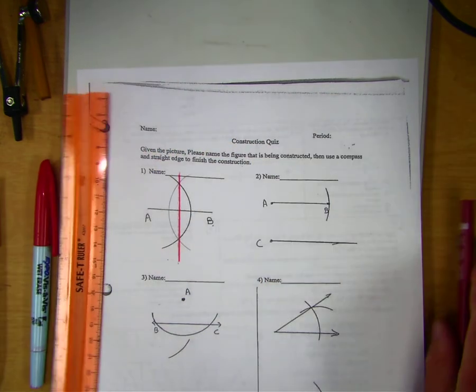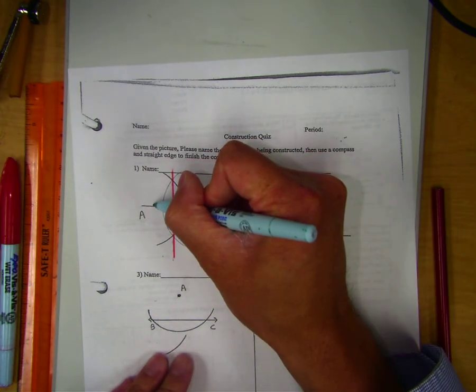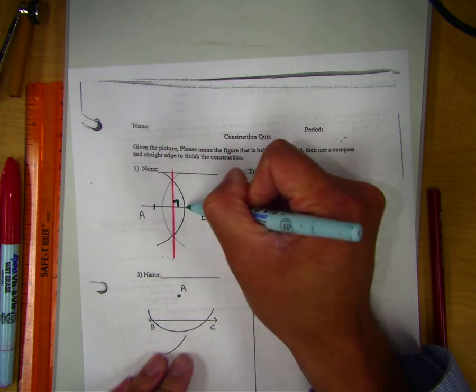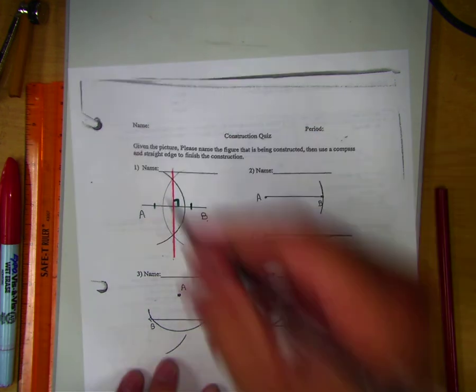From this picture we did in class, you'll recognize that you're forming perpendicular lines and in this case, they're also congruent. This one's called a perpendicular bisector.